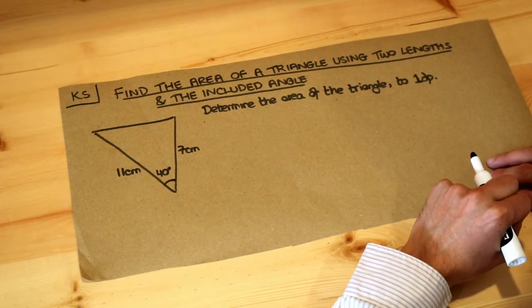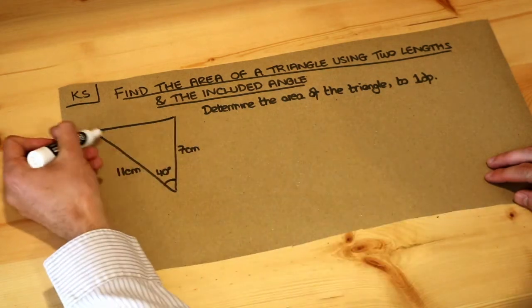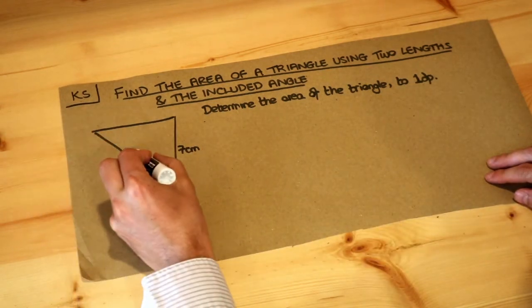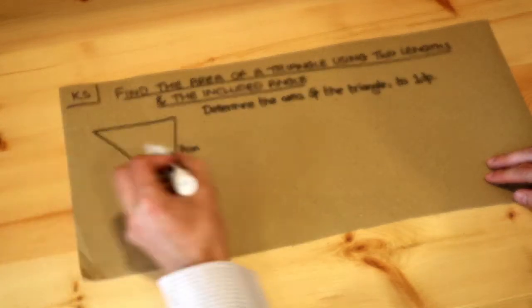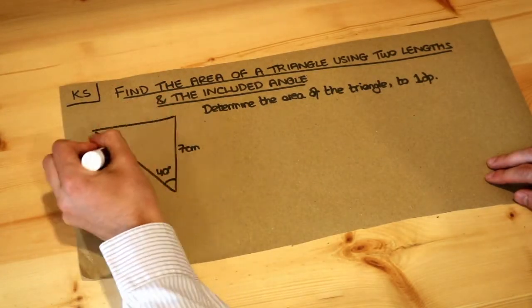The problem here is that we don't know what the perpendicular height is. If we use this as the base for example we would have to know this perpendicular height, and if we use this as the base we'd have to know that perpendicular height.